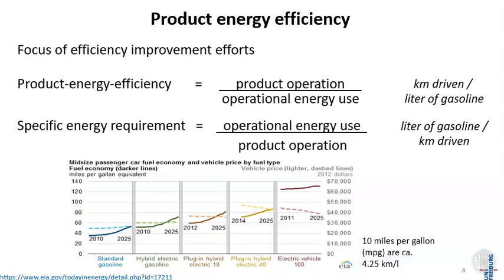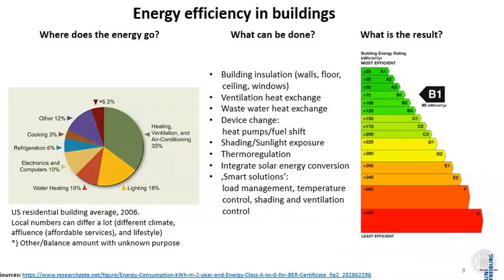One of the probably most interesting examples for efficiency at the product level are buildings. When we talk about energy efficiency in buildings, we need to answer three questions: first, where does the energy in the building go to? Second, what can we do with the different energy applications? And then, combining all the different reduction measures, what is the overall result?